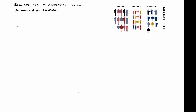I want to show you how to obtain an estimator for a proportion when we have a stratified sample. Let's suppose that we have a population of size N. Here, representing in the figure, a population that is divided into several groups, several strata. Let's say L strata. Each stratum will have size N1, N2, and so on up to NL. If we sum all these N1, N2 up to NL, we get large N.